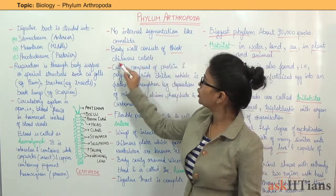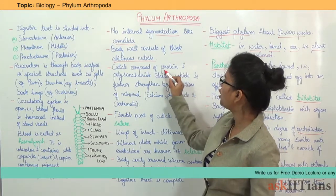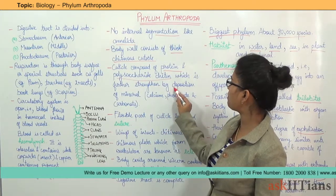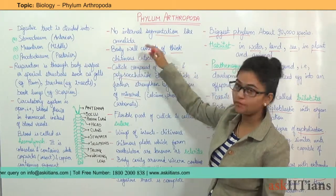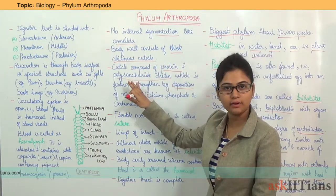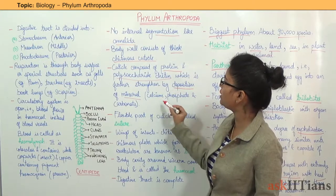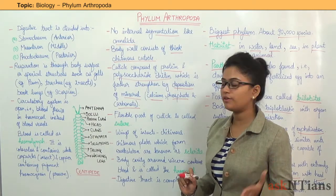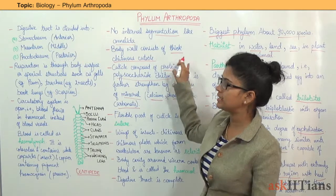The body wall consists of a thick chitinous cuticle, and this cuticle is composed of protein and polysaccharide chitin, which is further strengthened by the deposition of minerals like calcium, phosphate, and carbonate.